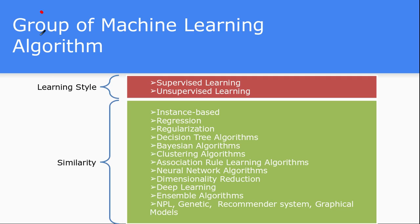One can divide the whole class of machine learning families in two different ways: one is the learning style based grouping, and one is the similarity based grouping. You can classify any algorithm by either its learning style or its similarity basis. Learning style includes supervised learning and unsupervised learning. There are others also, like reinforcement learning and semi-supervised learning, which haven't been included here — in a subsequent video, once we finish the main algorithms, we'll cover those.